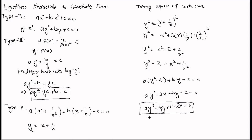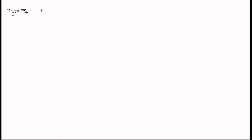The other type that can be reduced to a quadratic form is Type 4 — these are exponential equations. Exponential equations are of the form ak^(2x) + bk^x + c = 0, where k is a constant and k must not equal 0.